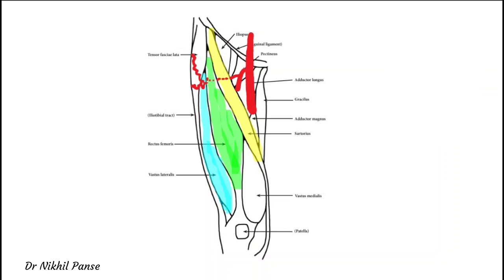Then the lateral circumflex femoral gives the descending branch which goes between the vastus lateralis and the rectus femoris towards the knee joint.